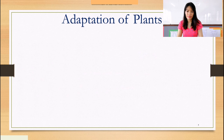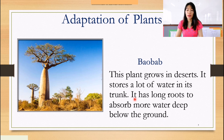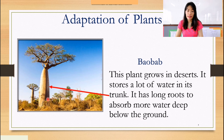The next plant is baobab. How does the baobab adapt to its environment? This plant grows in deserts. It stores a lot of water in its trunk and has long roots to absorb more water deep below the ground. That is the trunk of the baobab — the water is being stored in there.